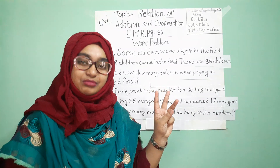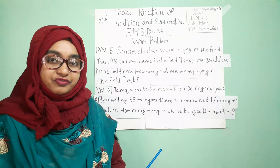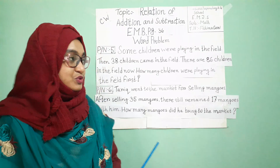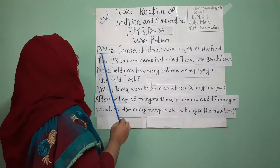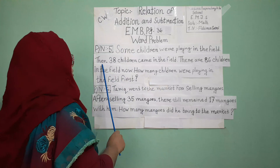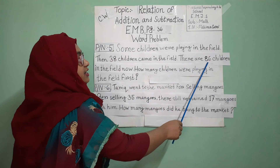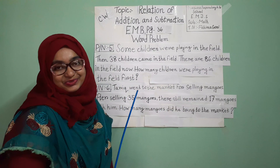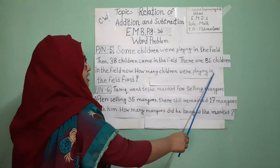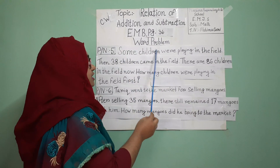I know all of you have remembered all these things. Now, all of you follow me to the board. We will discuss it, we will understand it, then we will do the solution. Problem number 5: some children were playing in the field. Then 38 children came in the field. There are 86 children in the field now. How many children were playing in the field at first?